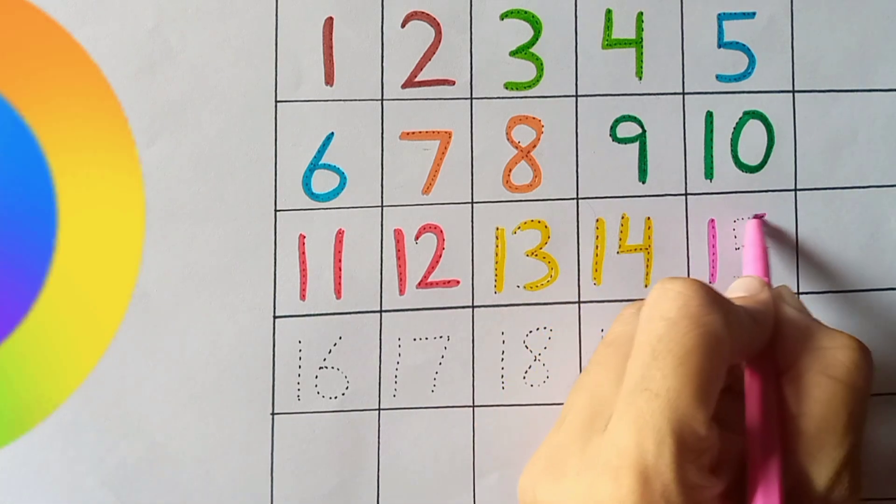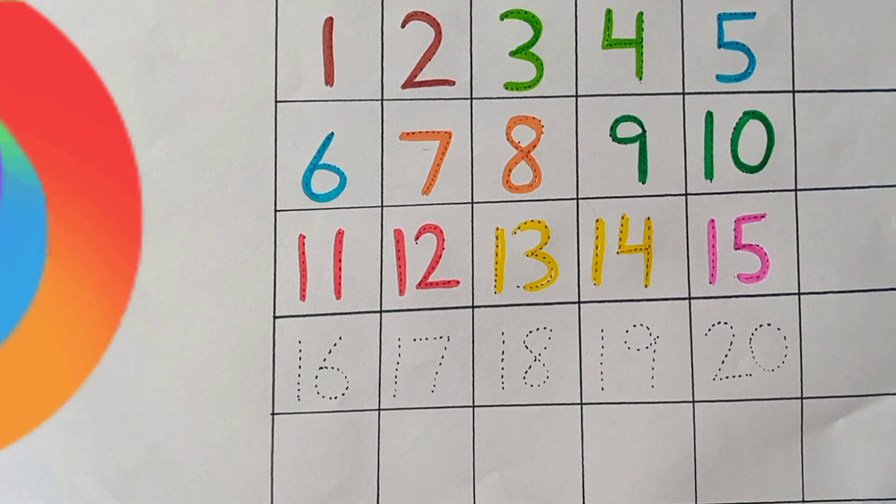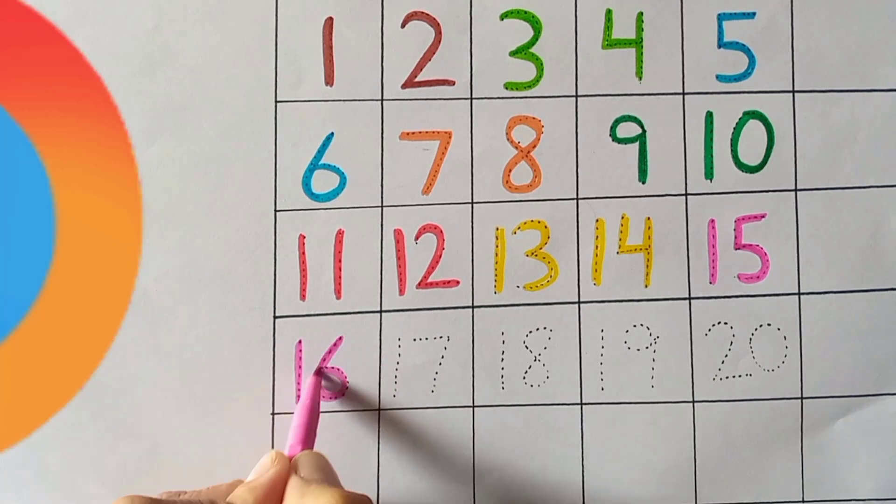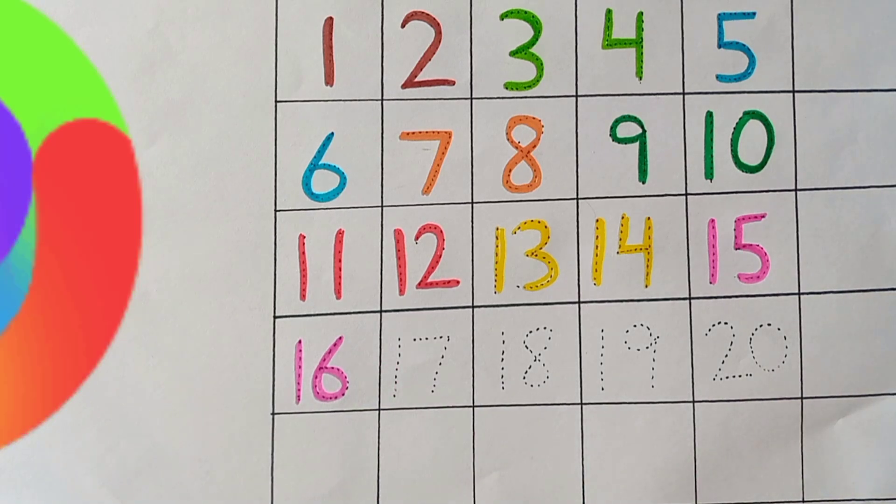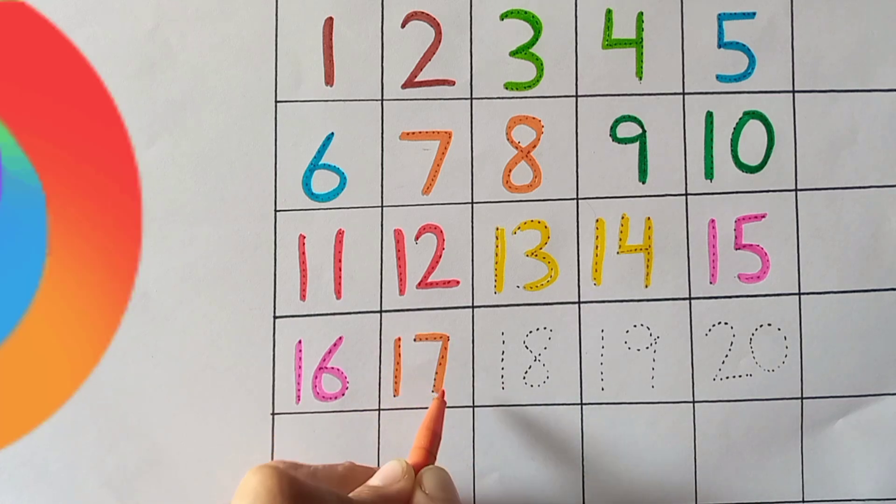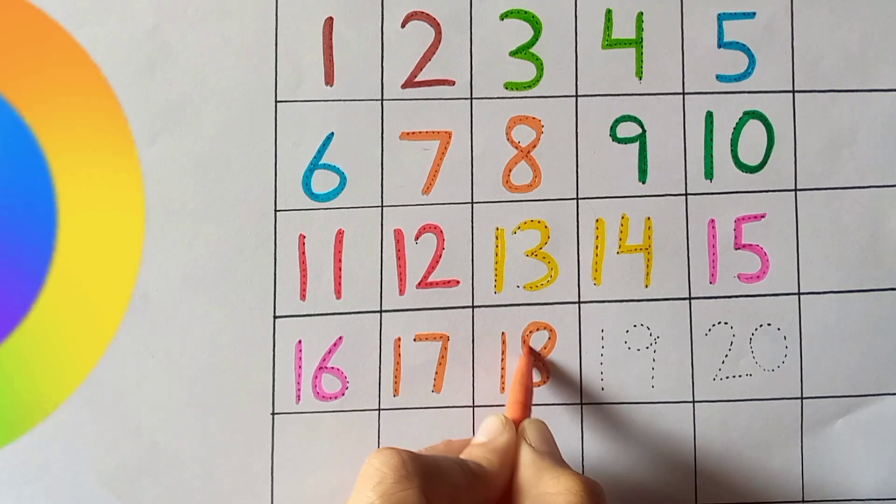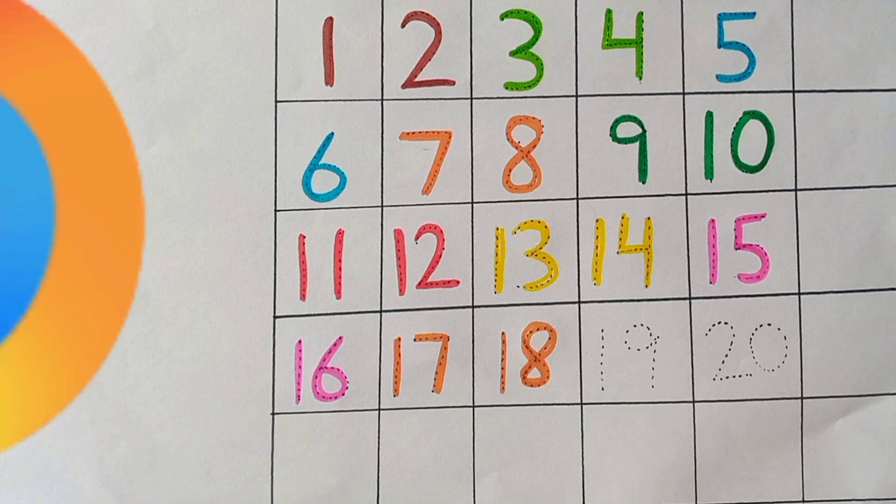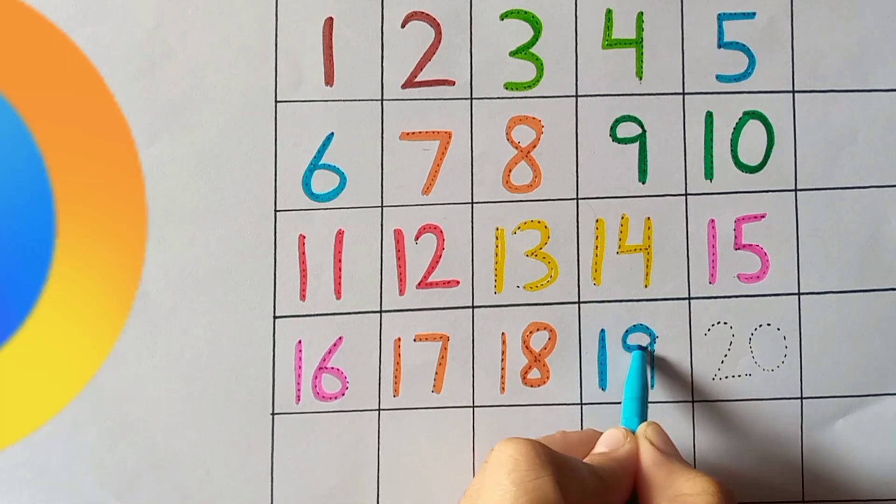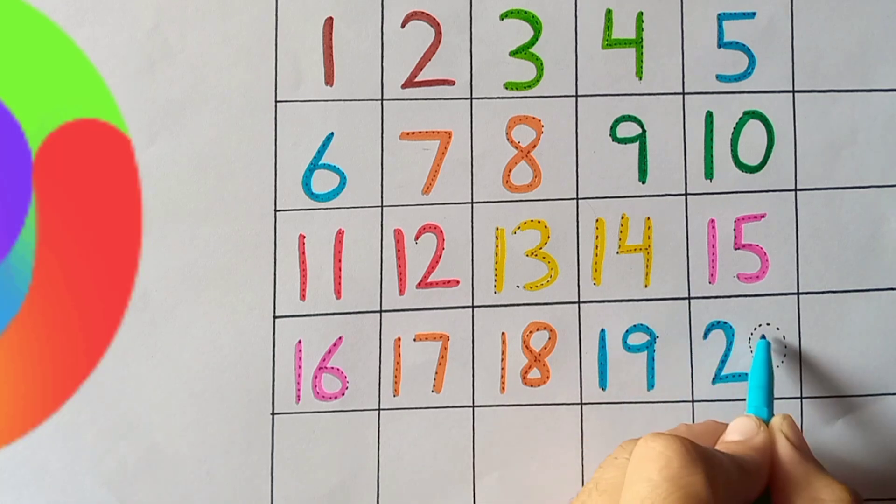One five, fifteen. Sixteen, one six, sixteen. Seventeen, one seven, seventeen. Eighteen, one eight, eighteen. Nineteen, one nine, nineteen. Twenty, two zero, twenty.